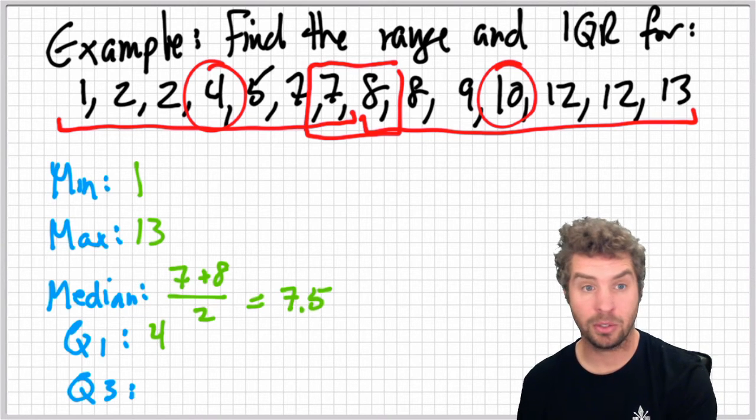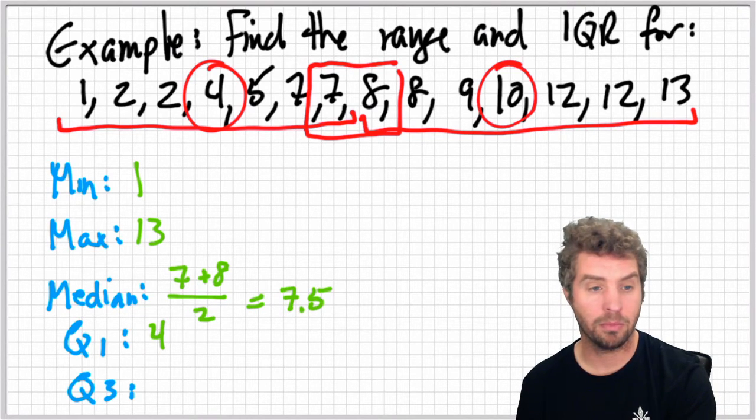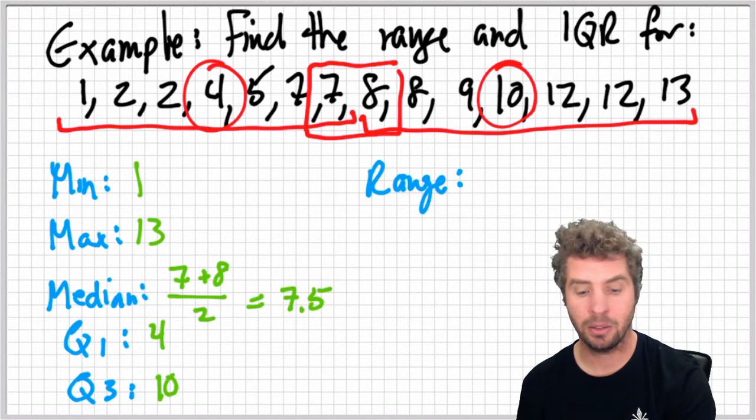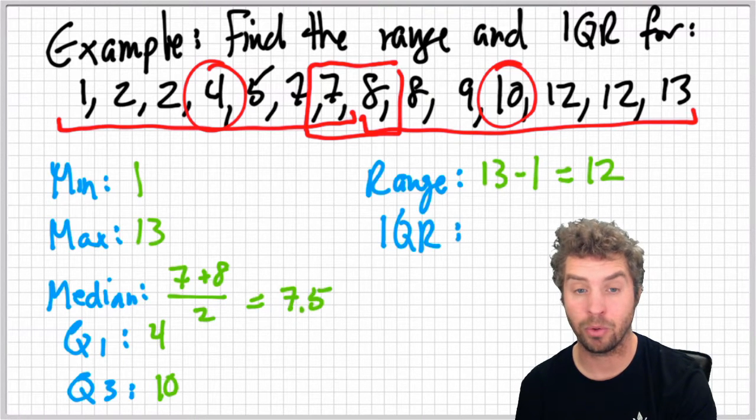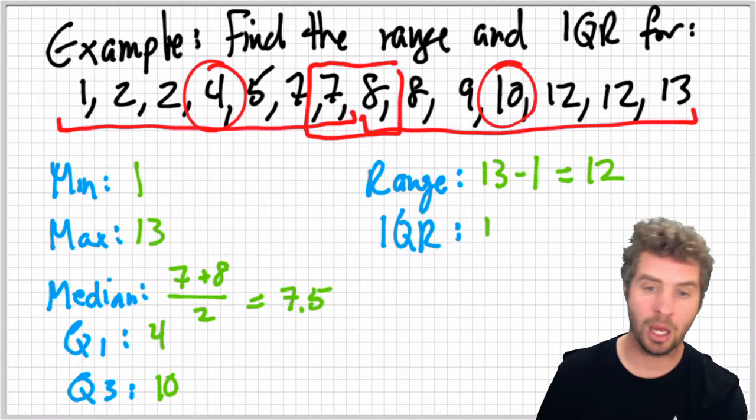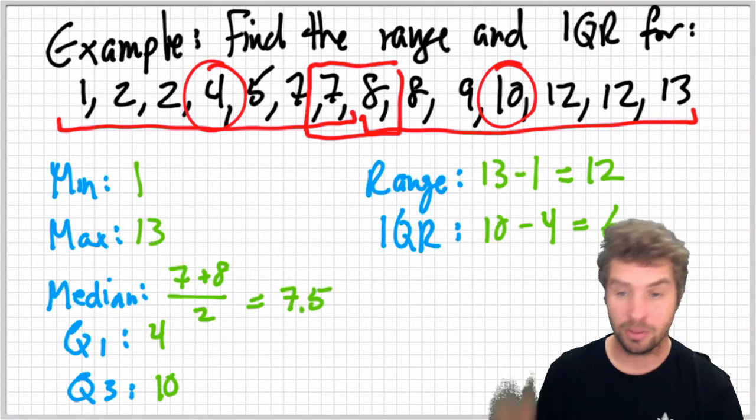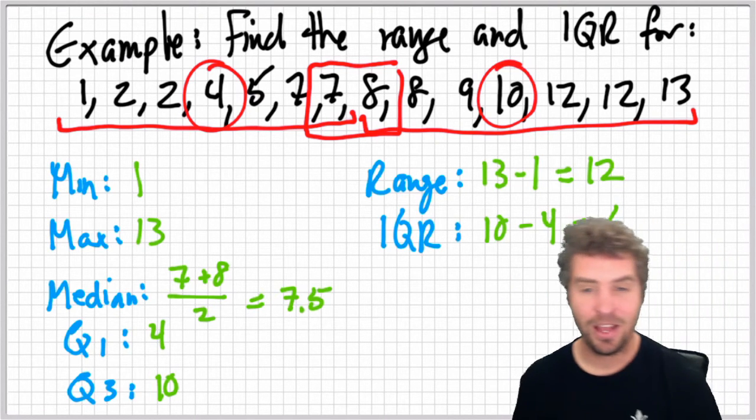Now, great, that's our, well now we want to find the range and the interquartile range. So, we take thirteen take away one for the range, and for the interquartile range, we'll do ten take away four, which is six.